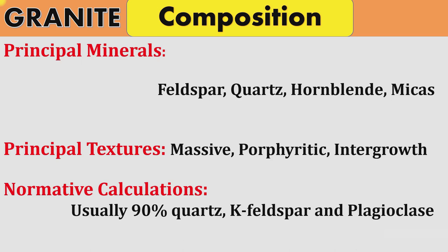Some granites show intergrowth textures in which two or more minerals are intergrown with each other. These may be myrmekite, graphic, or pertite types of textures found in these granites. For normative calculations in research, 90% quartz, K-feldspar, and plagioclase — these three important minerals — are considered.